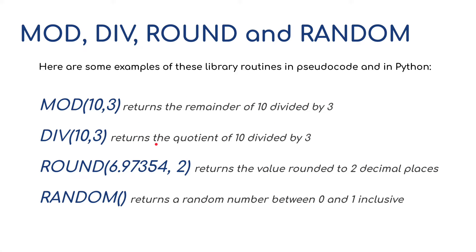I've got some examples in Python to show you these working. For mod, if we divide 10 by 3, it's going to return the remainder value — remainder 1. For div, 10 divided by 3 would return the quotient, so it would return 3. Rounding numbers would return 6.97. And then import random, which we'll come to a little bit later on.